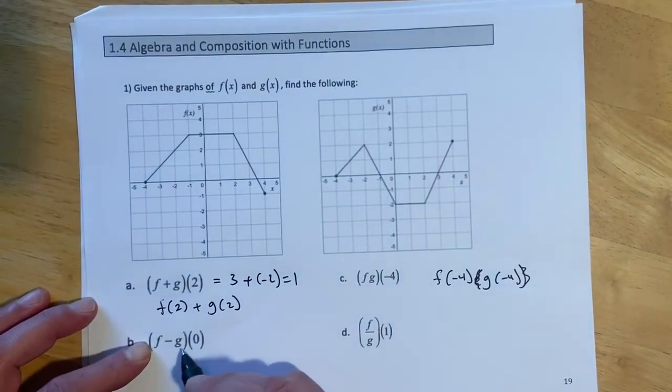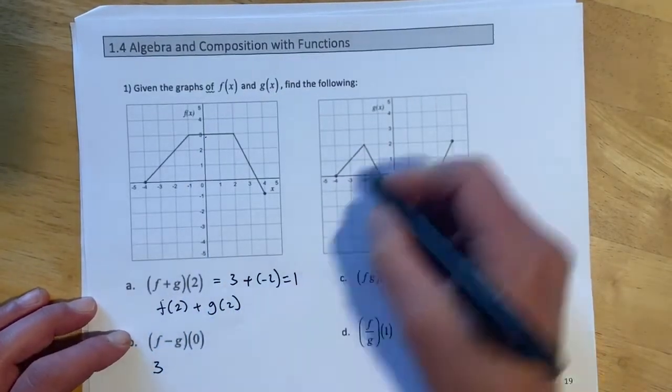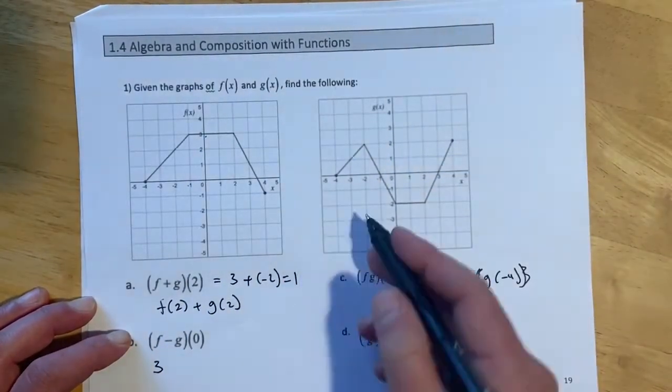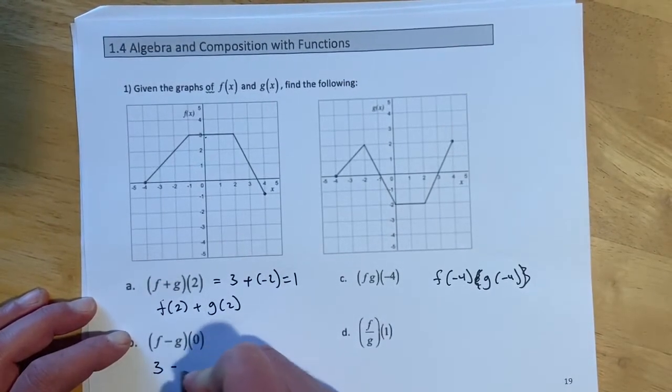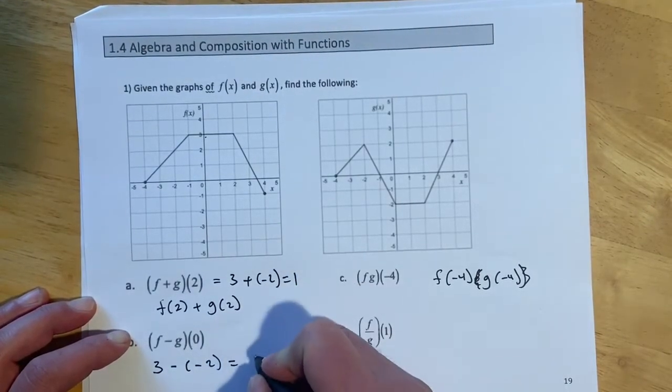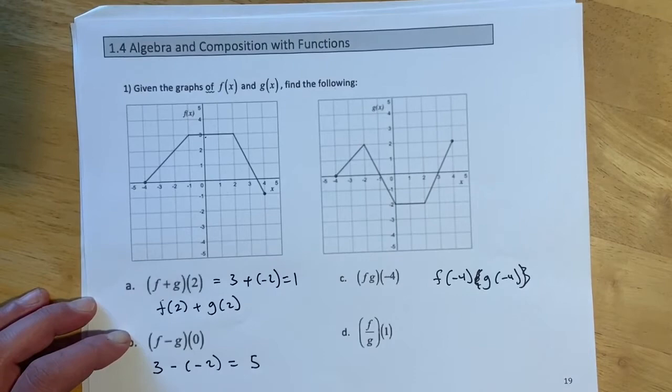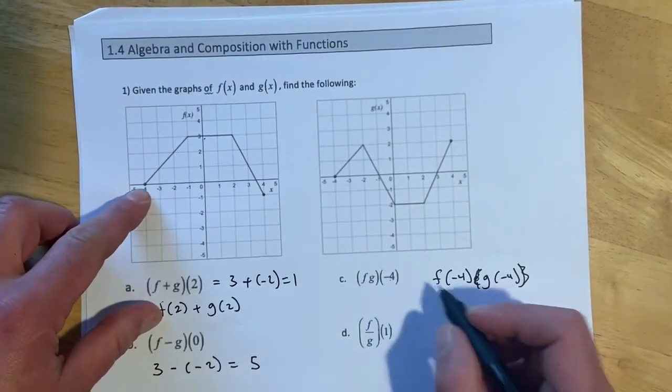f minus g evaluated at 0. f at 0 was 3 again, g at 0 is minus 2 again. But this time we have minus and negative, so that's going to make that a plus. And so that will equal 5.